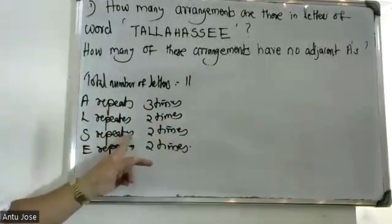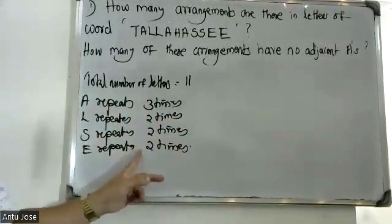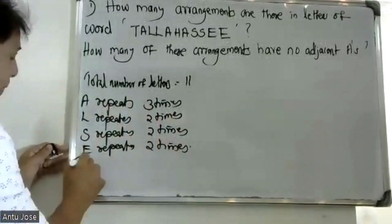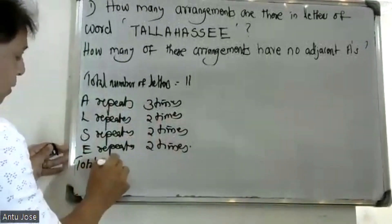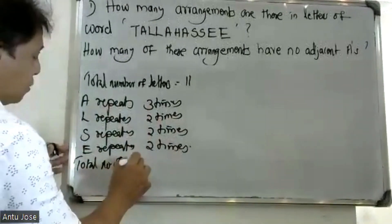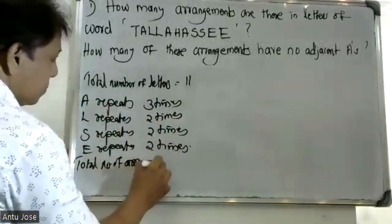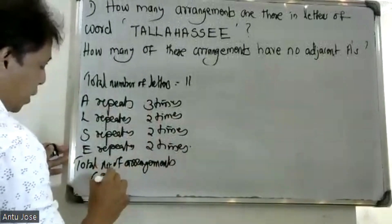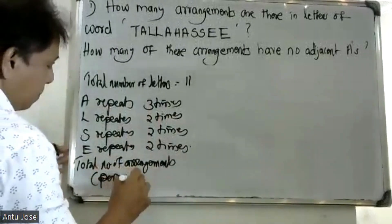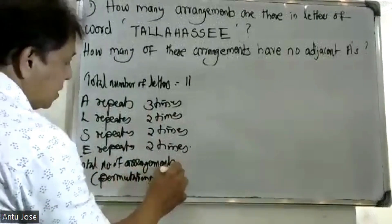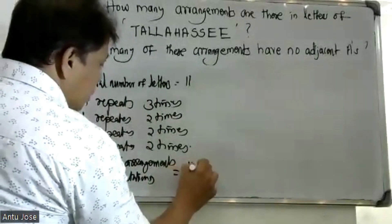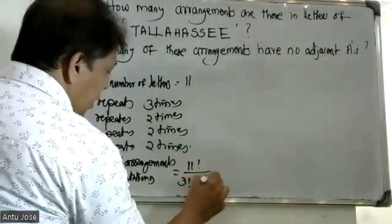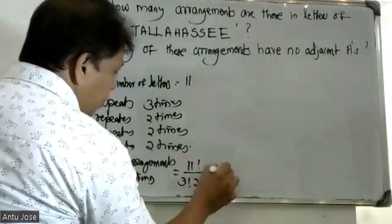For the total number of arrangements, the formula is: number of arrangements is equal to 11 factorial divided by 3 factorial times 2 factorial times 2 factorial times 2 factorial.